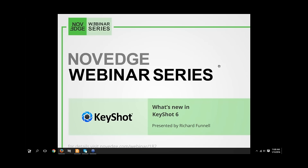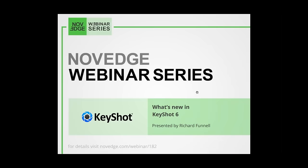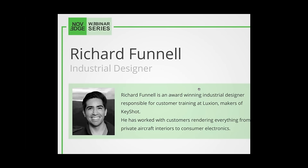Hello everyone, welcome to a new episode of our Novage webinar series. Today, what's new in KeyShot 6? In this webinar, we'll go through the new features and enhancements you can find in KeyShot 6. From the geometry editor to the material graph, we'll cover updates to the software that make it even more powerful and easy to use. Today's presenter, Richard Funnell, is an award-winning industrial designer responsible for customer training at Luxion, makers of KeyShot.